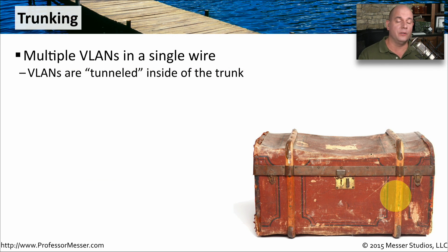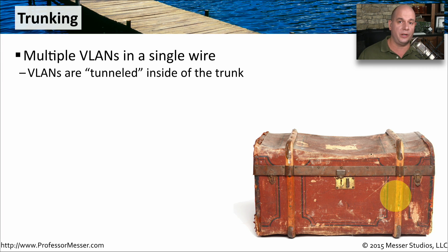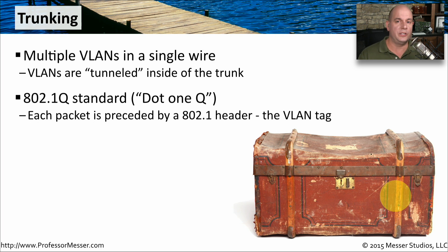In many environments, you don't simply have a single switch — there are many different switches, and each one of these switches may have people connected to it from the marketing department, shipping and receiving, manufacturing, and the executive team. So you may need to have some way to extend VLANs between switches, and we do that with something called trunking. With trunking, we're effectively tunneling this VLAN information from one switch to another, so that wherever anybody is connected, they're still on their local VLAN with all of their local resources. The standard that specifies this tunneling method between switches is called 802.1q — you'll sometimes hear people refer to this as a .1q configuration.